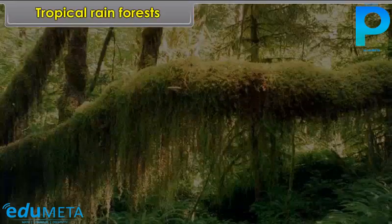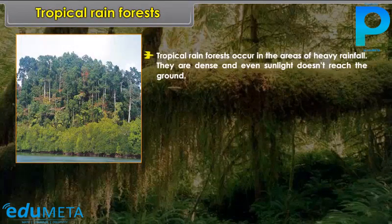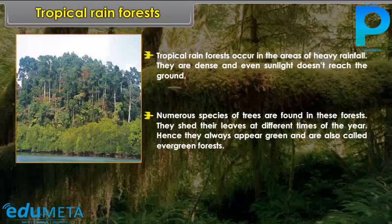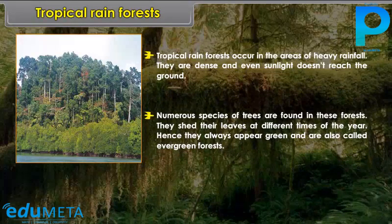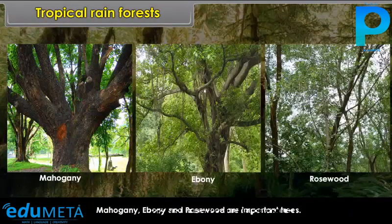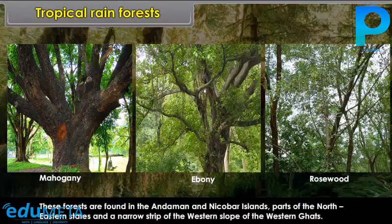Tropical rainforests occur in areas of heavy rainfall. They are dense and even sunlight does not reach the ground. Numerous species of trees are found in these forests; they shed their leaves at different times of the year, so they always appear green and are also called evergreen forests. Mahogany, ebony, and rosewood are important trees. These forests are found in the Andaman and Nicobar Islands, parts of the northeastern states, and a narrow strip of the western slope of the Western Ghats.